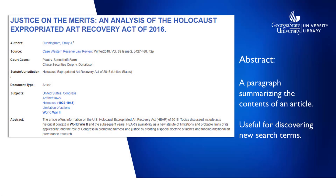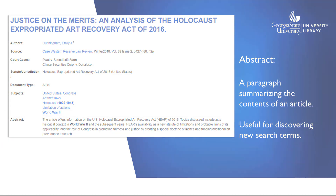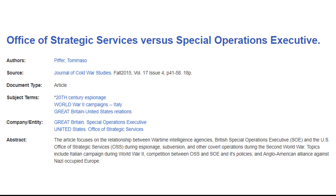The abstracts included in most article databases are useful for discovering new search terms as well. They'll often mention terms or ideas you didn't think of the first time around. Let's say I'm still doing that paper on World War II history and I'm interested in the underground resistance movement in France. I found this article that looks relevant. Looking at the abstract gives me some new terms I didn't know — there were agencies called the Office for Strategic Services in the US and Special Operations Executive in the UK that I can search for as well.